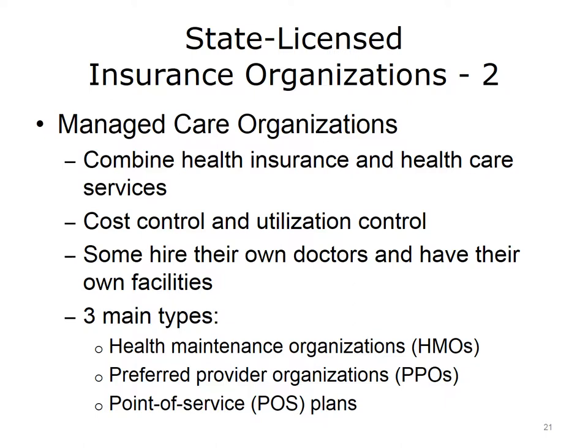Managed care organizations are the third type of state-licensed insurance organizations. These companies combine health insurance benefits with the actual delivery of health care services. They impose tight controls on costs and use of services, and some have their own doctors and facilities. The three main types of managed care organizations are health maintenance organizations, or HMOs, preferred provider organizations, or PPOs, and point-of-service, or POS plans. Managed care organizations will be discussed in more detail in a later lecture.